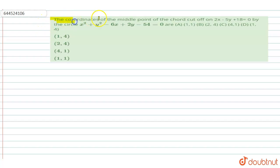Hello, welcome to Doubtnut. In this question given, the coordinate of the middle point of the chord cut off on 2x minus 5y plus 18 equals 0 by the circle x square plus y square minus 6x plus 2y minus 54 equals 0. And we have the four options A, B, C and D.